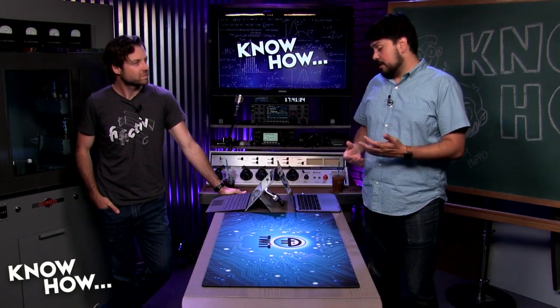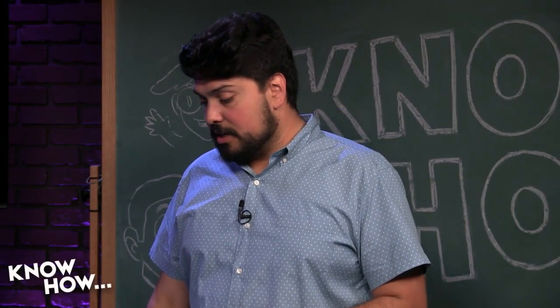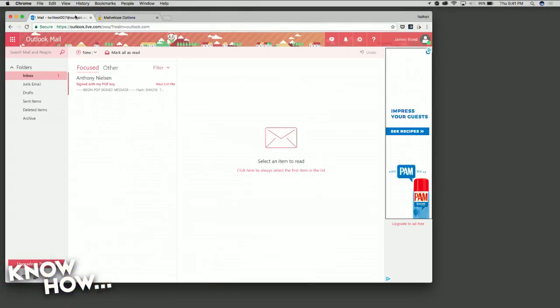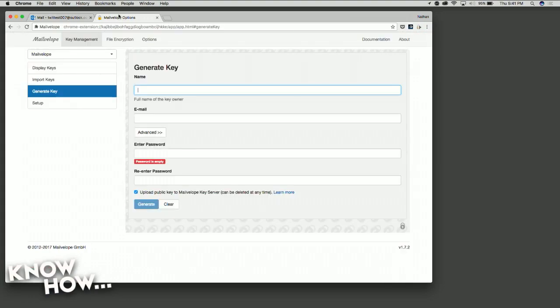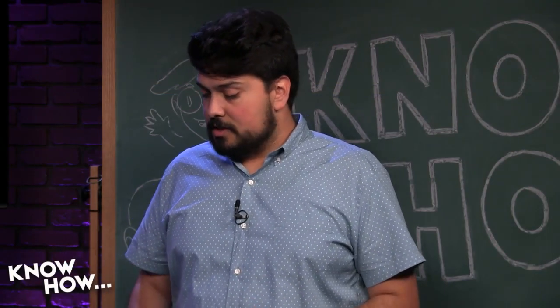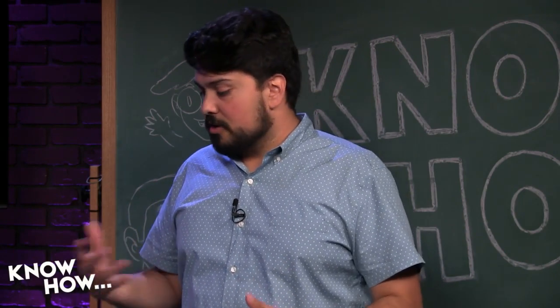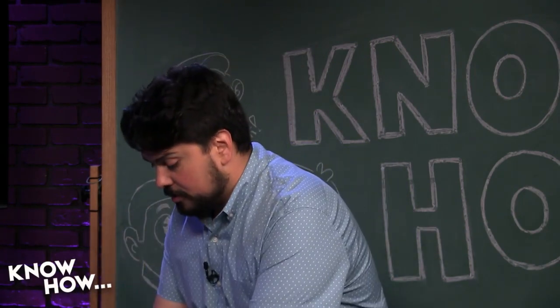We do advocate overall for the use of password managers. So what I'm going to do now is set up — I created an email account called twittest007 at outlook.com, and I'm going to create a PGP key associated with this email account. That's Microsoft Outlook, which is not encrypted end-to-end.